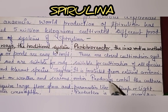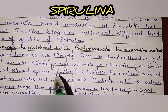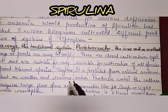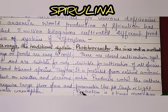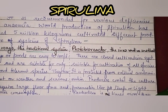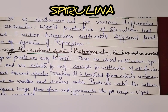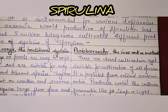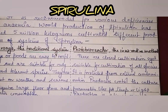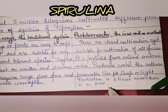The photobioreactor is protected from external contaminations. In open ponds, other species can come in and contaminate the culture, but in a photobioreactor that is not possible. Producers can control the culture parameters like pH, temperature, or light, and production is also 8 times more than that in a pond.